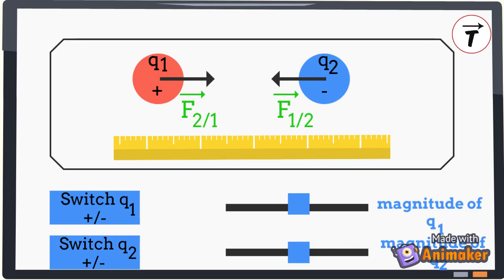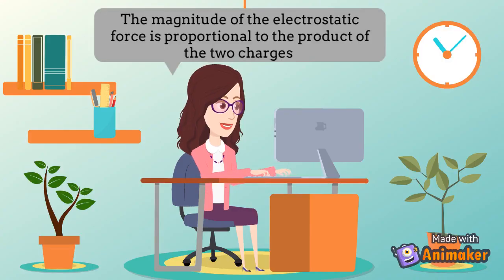The magnitude of the force decreases when the magnitude of the charge decreases. The magnitude of the electrostatic force is proportional to the product of the two charges.